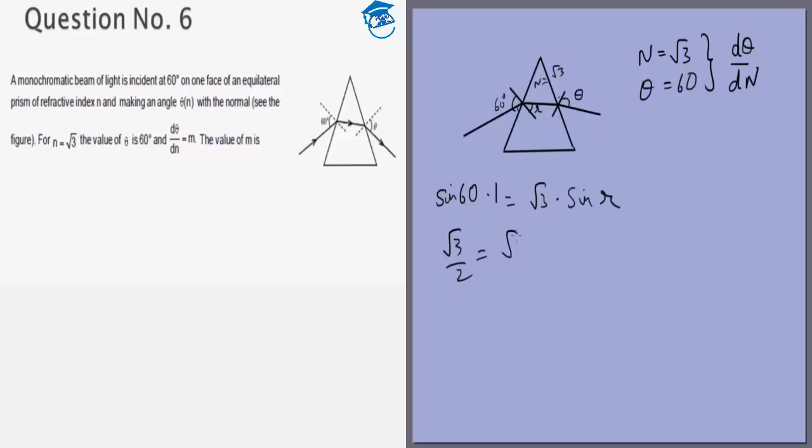From that we can get that sin 60 is root 3 by 2 equals root 3 times sin r, or sin r is 1 by 2, or r equals 30 degrees. So this is a very important result.